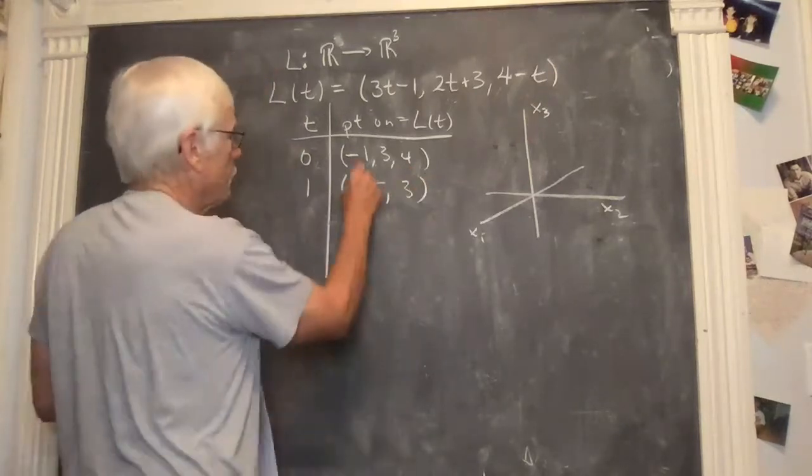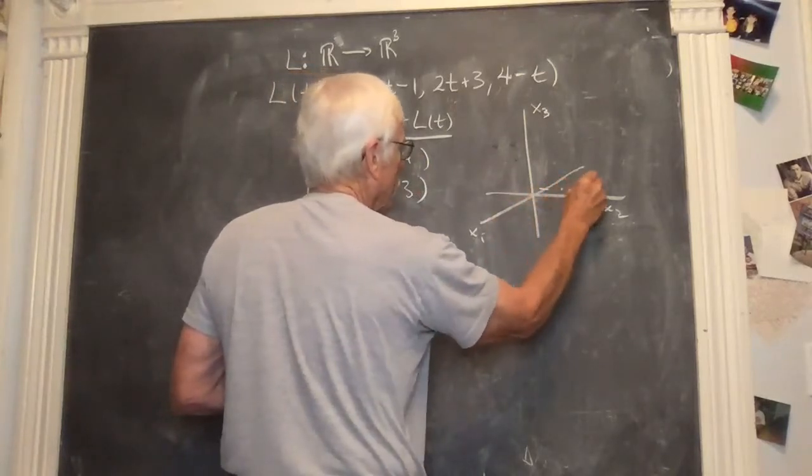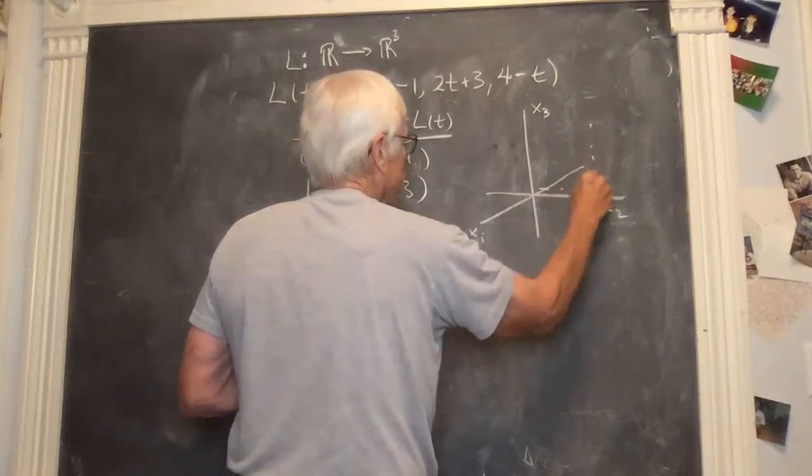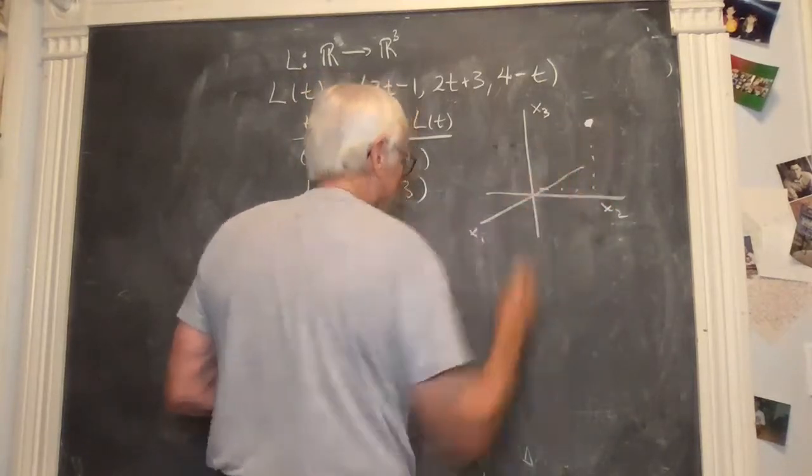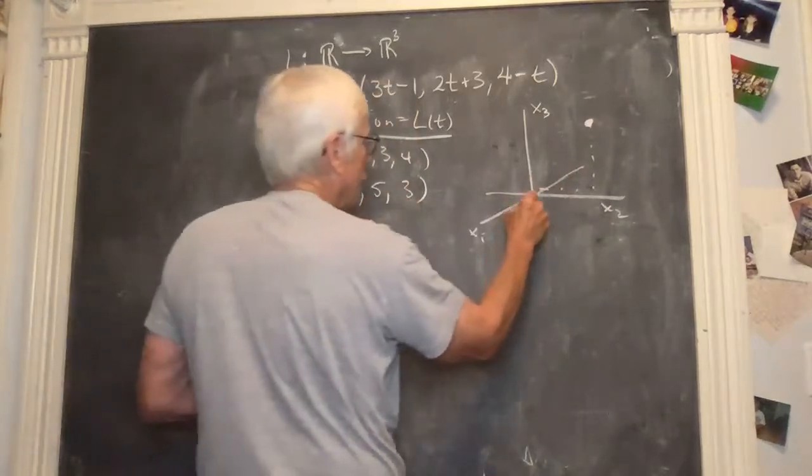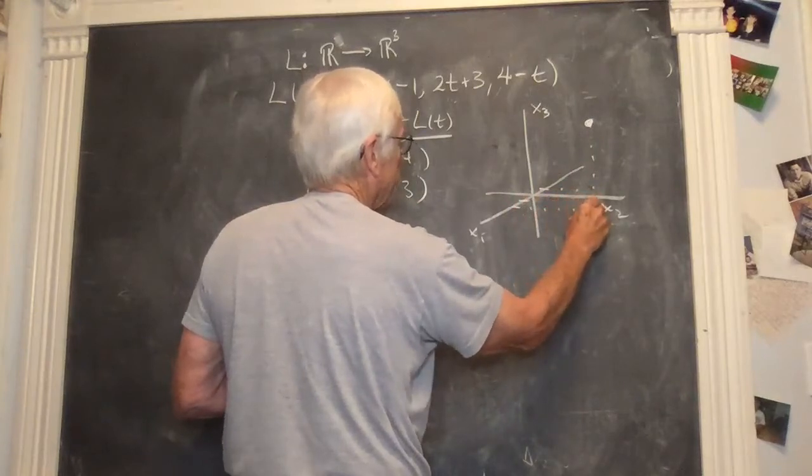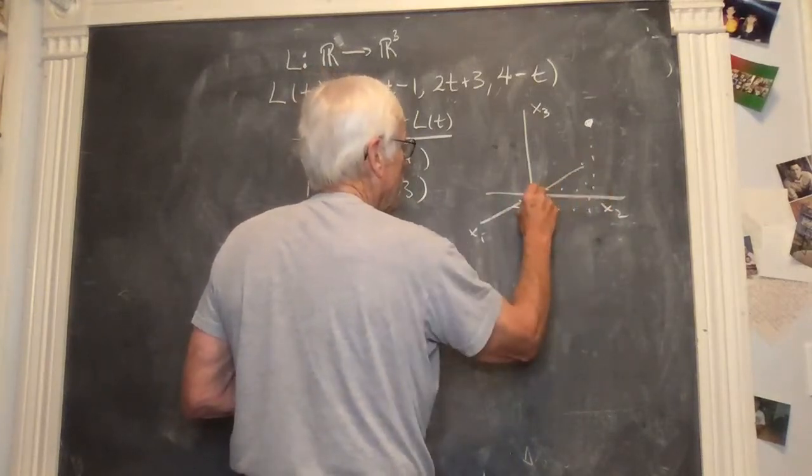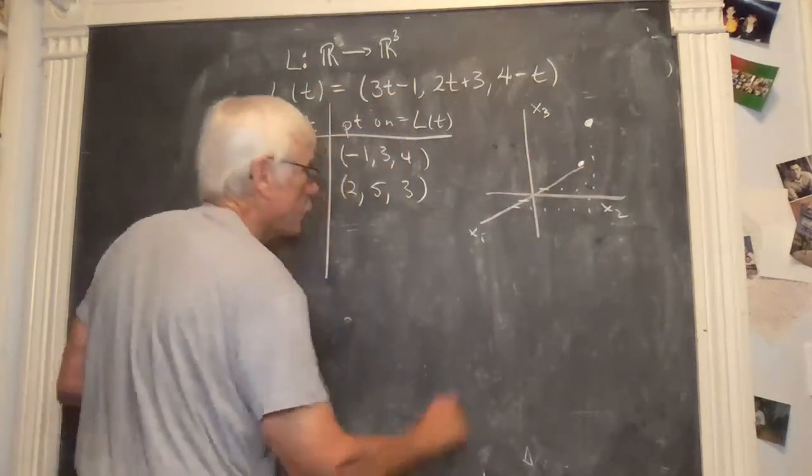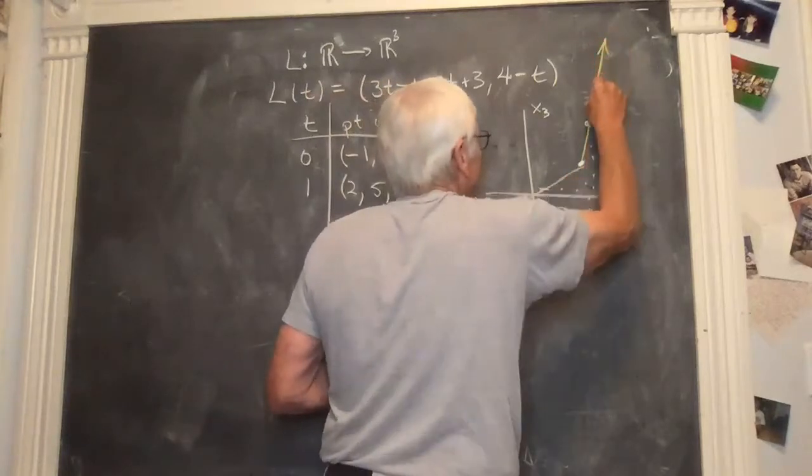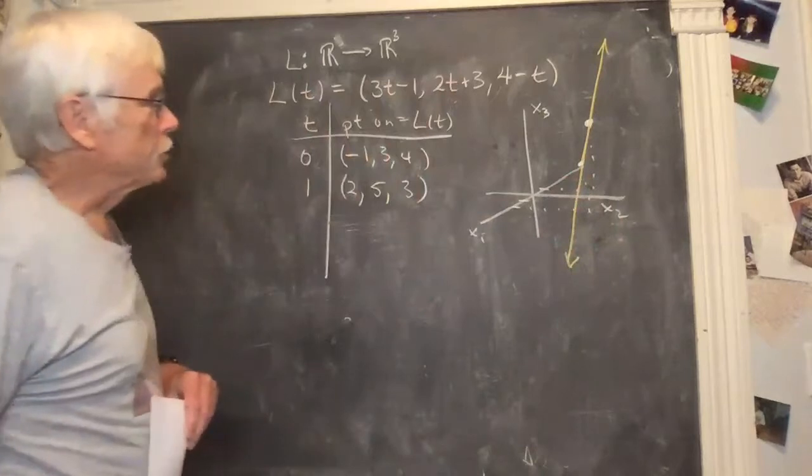So graphing the point minus one, three, four. Minus one in the x1, and one, two, three, one, two, three, four. So this point right here is two, five, three. One, two, three, four, five, and three, one, two, three. So this point here is on. The line we're looking at, the range of the function, is that line right there.